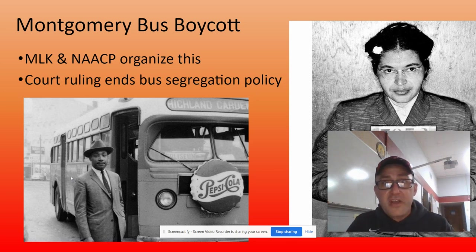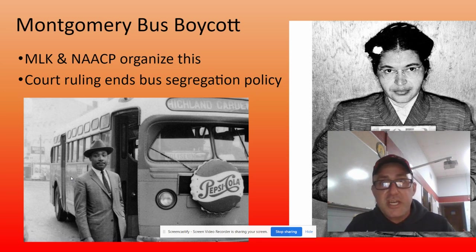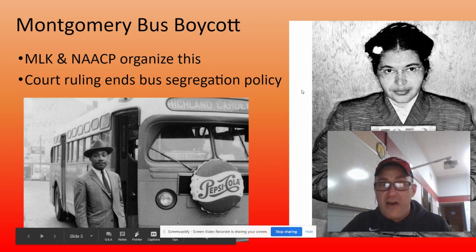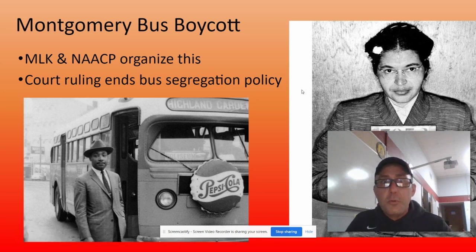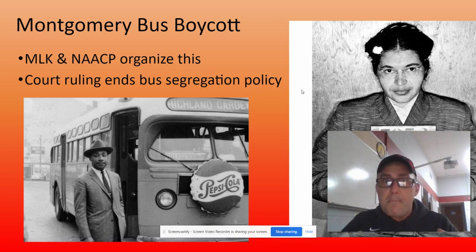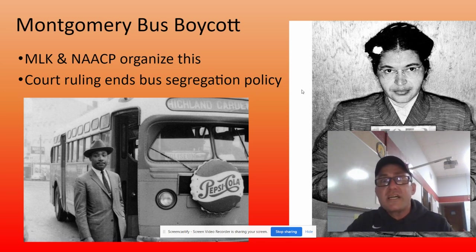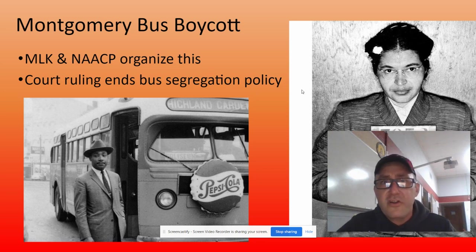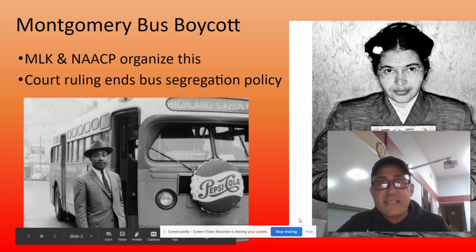Martin Luther King ends up having a successful protest that gains national attention and gets traction — there is an actual policy change, and he made Rosa Parks a household name. He understands what he did here with this peaceful protest where the community mobilized together and boycotted the bus company. It had a lot of success, so he's going to use that as a model for many future protests that we'll start covering in the very near future. If you have any questions, shoot me an email or come see me.